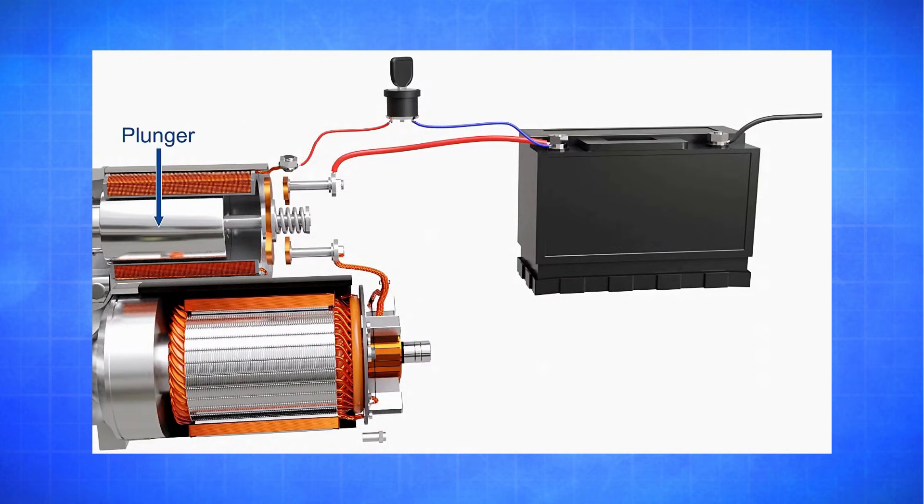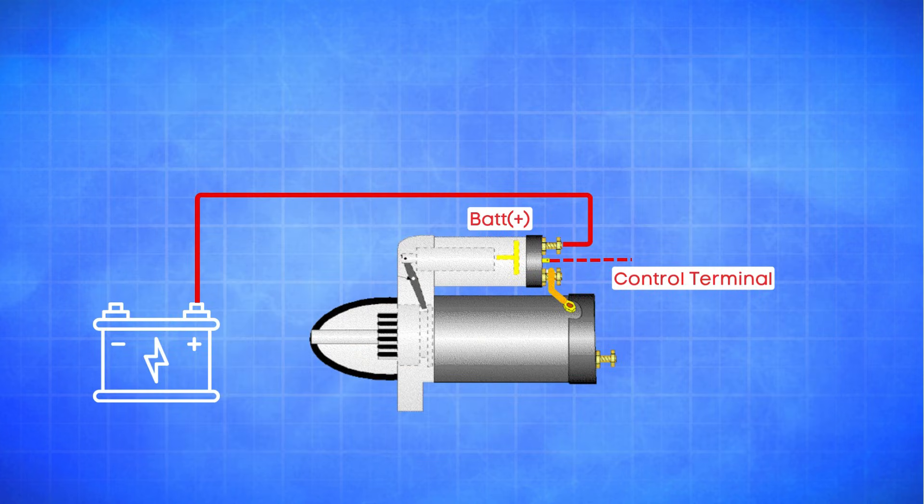Once the contacts close, a large electric current is relayed directly from the battery to the starter motor through the starter terminal. This powers the starter motor, which cranks the engine.